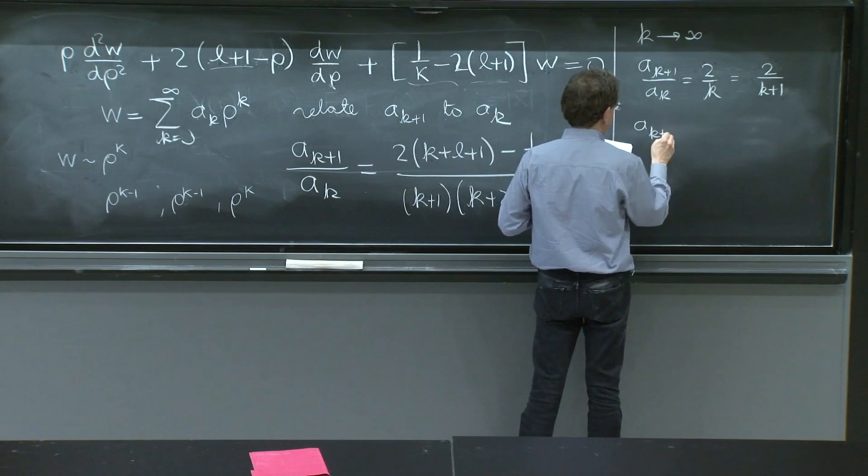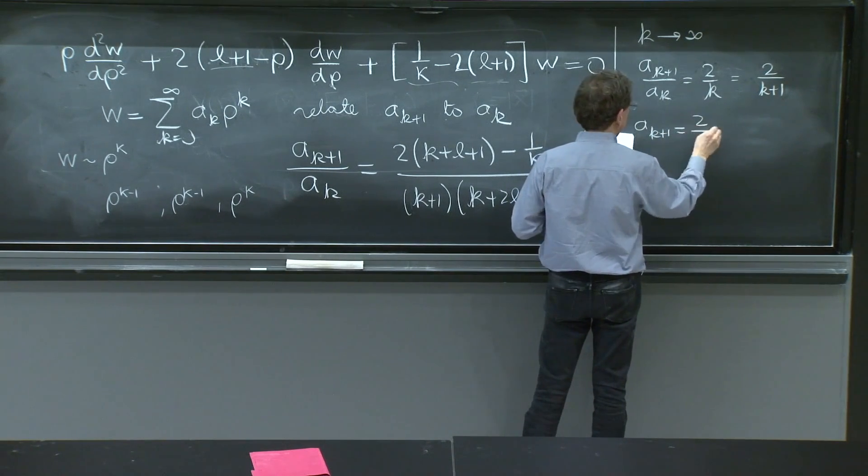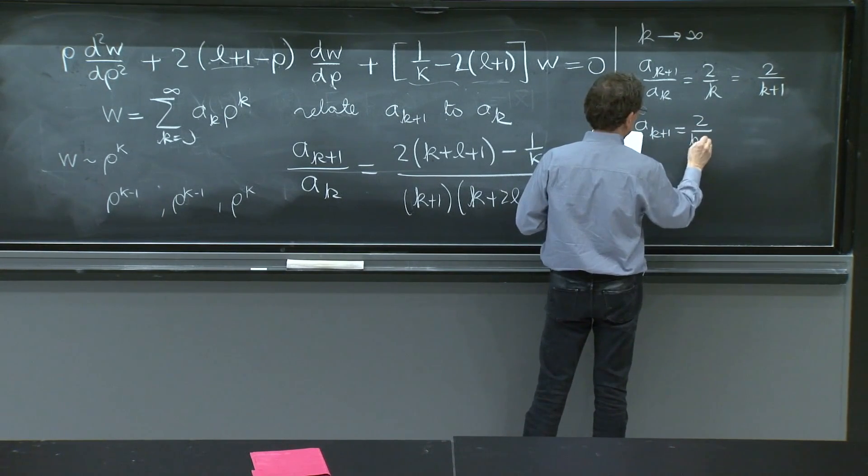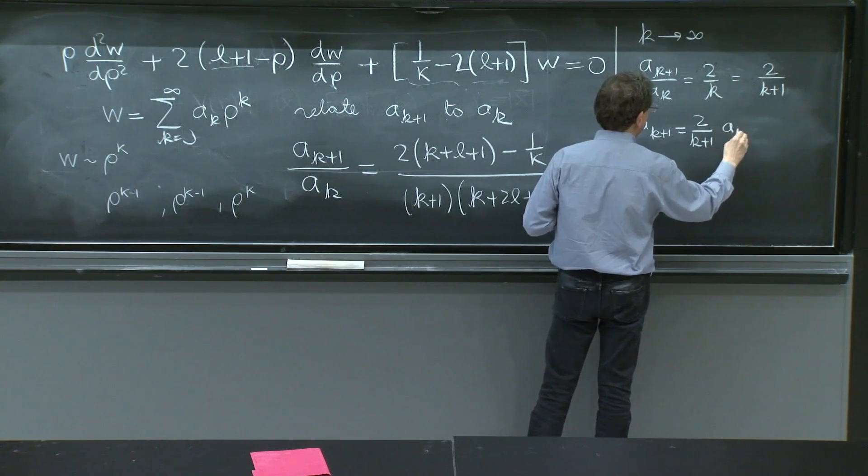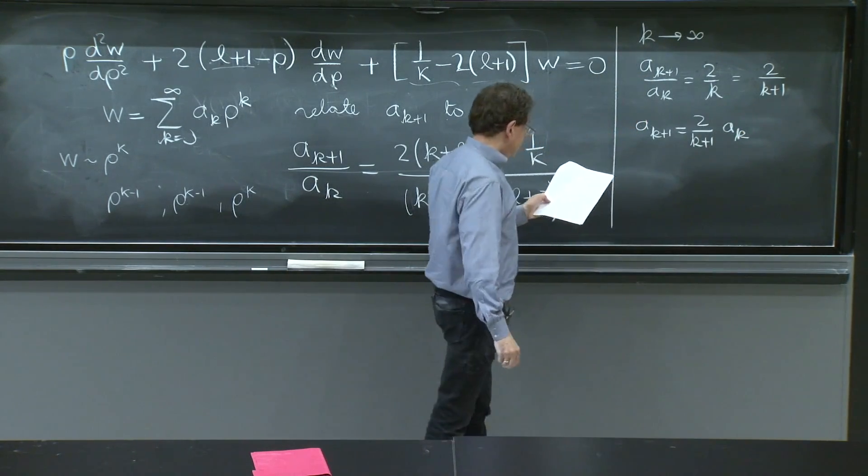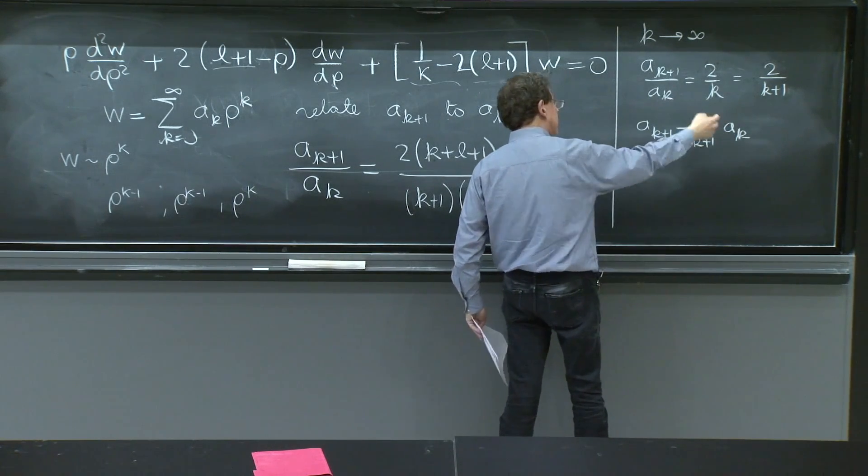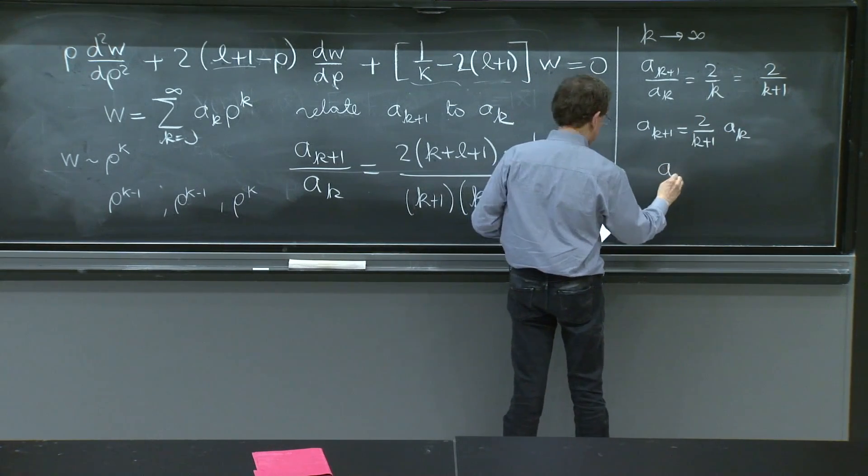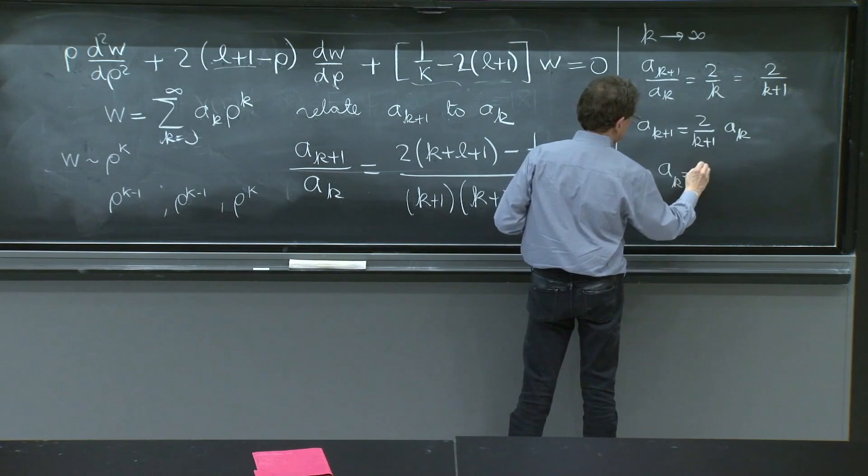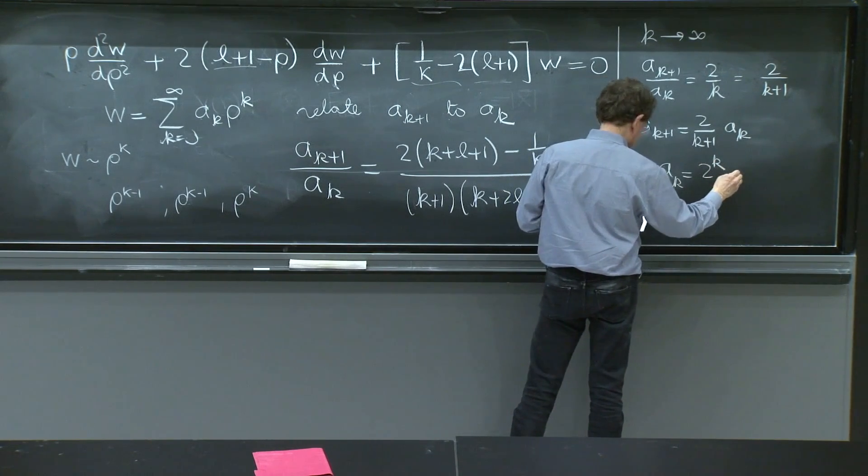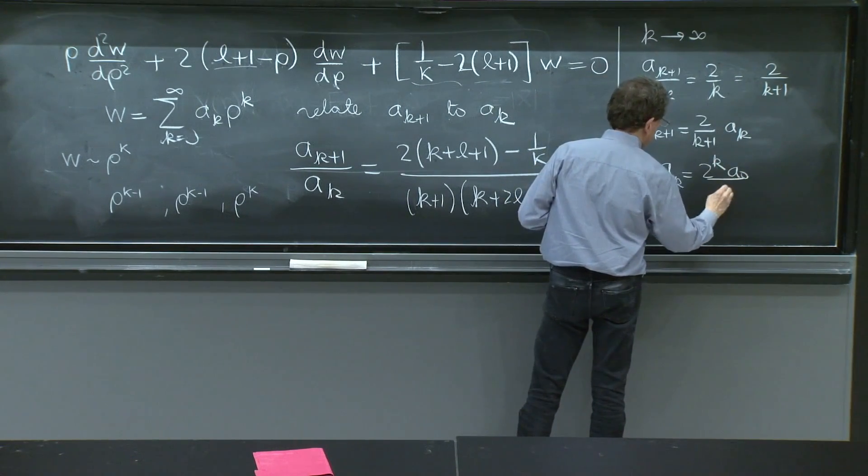So 2k plus 1, ak. And a solution of this is to say, you could try with a0 what a1 is, what a2. ak is 2 to the k a0 over k factorial.